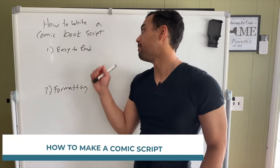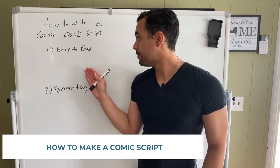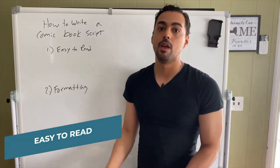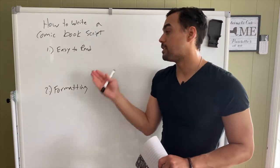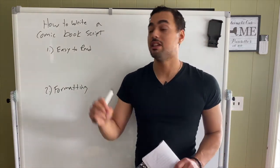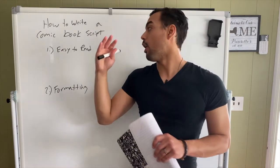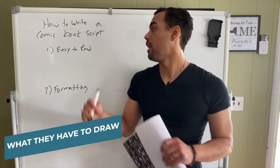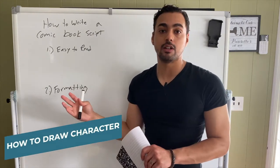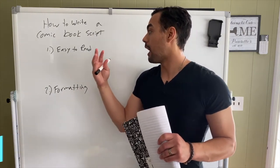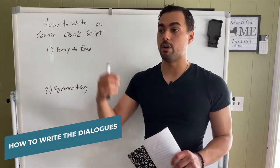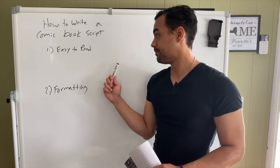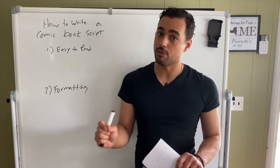Today we're going to talk about how to make a comic book script, and the first thing to think about is it has to be easy to read. Because this script is going to go to an artist, and an artist has to understand all the ideas you're putting on the page. You want them to be able to understand what they have to draw, how to draw the characters, and how to write the dialogue for when you give it to a letterer. It's going to go to an artist and then a letterer, so it's very important to make it easy to read.